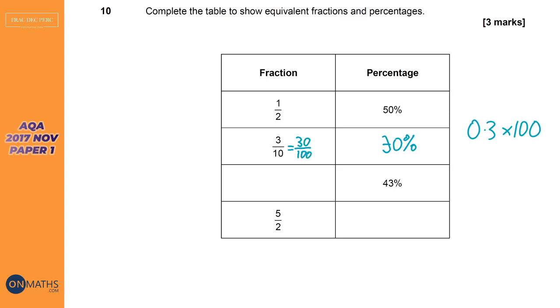And you could rewrite that as 30 over 100. And whenever a fraction has a denominator of 100, the numerator, the top number, is the percentage. So 30 over 100 is 30%. And the way I got 30 over 100 was I times top and bottom by 10.